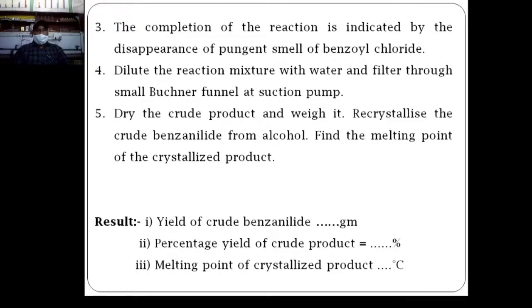Result: the yield of crude benzoanilide in grams, percentage yield of crude product obtained from calculation of percentage yield, and the melting point of crystalline benzoanilide is in the range of 161 to 162 degrees Celsius.